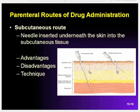Drugs given by the subcutaneous route are administered by means of a needle inserted underneath the skin into the subcutaneous tissue. The onset of action of the subcutaneous route is faster than the oral route but slower than the intramuscular route. Absorption is delayed in circulatory collapse, such as shock. Only a small volume of drug can be given by this route.